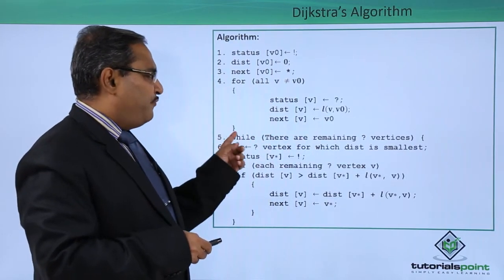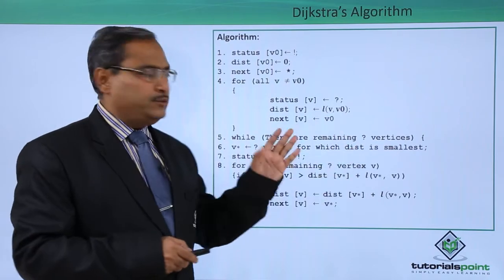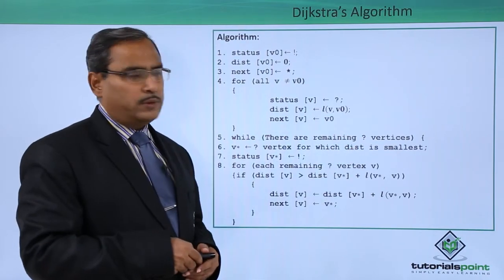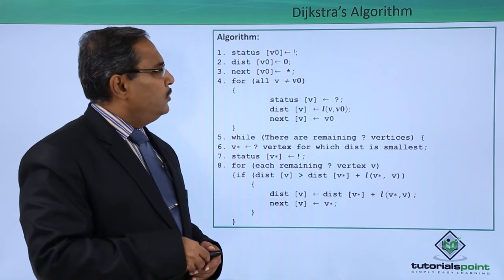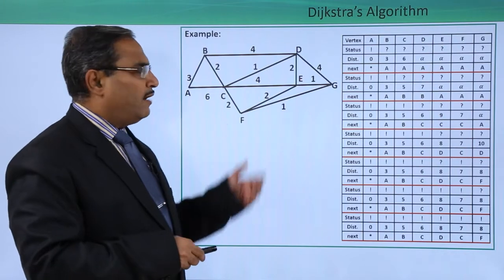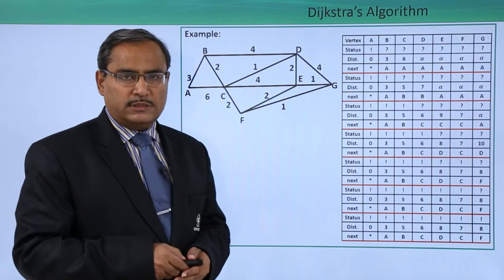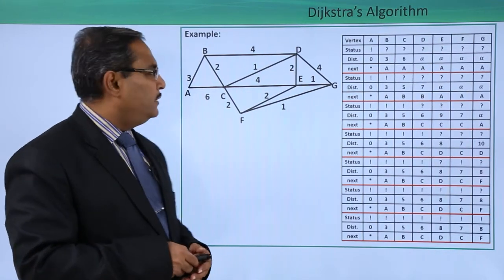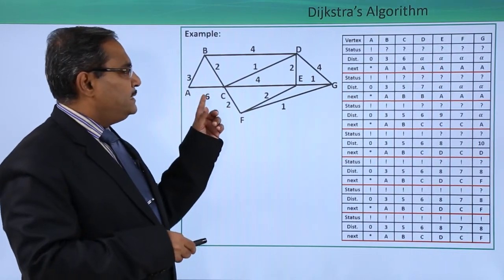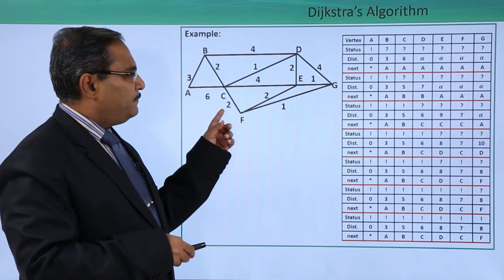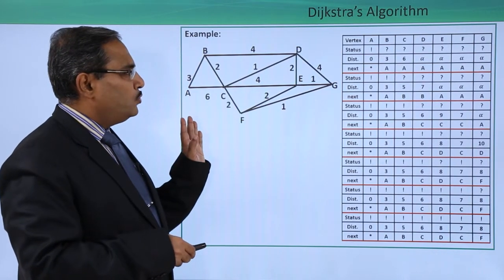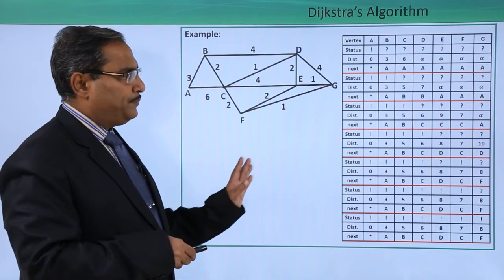Up to step 4 let us trace through an example, then we shall proceed from step 5 onwards. Here we are given one graph with nodes A, B, C, D, E, F, and G.